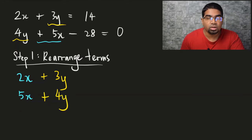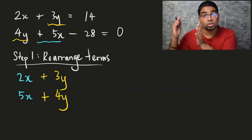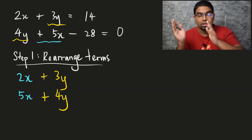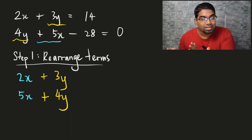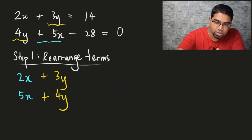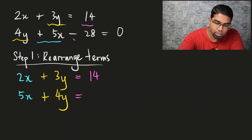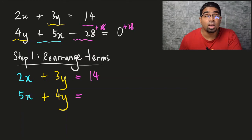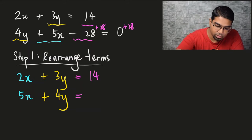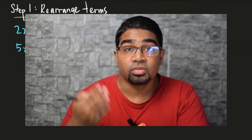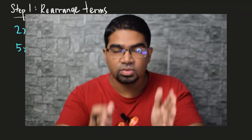Generally, we put the number on the right side. We just leave all the unknowns on the left side and put the number on the right side of the equation. So it will be equals to 14. Now here the number is on the left side, so when we want to eliminate it from the left side, we add 28 to both sides. Don't forget, it will become positive 28, not negative 28. So this will be 28. Now step 1 is complete — we have rearranged the terms and aligned the like terms vertically.